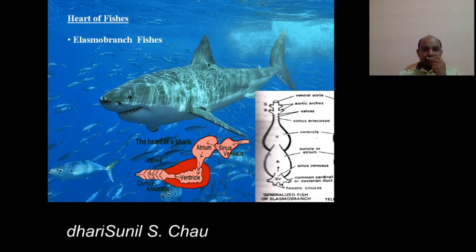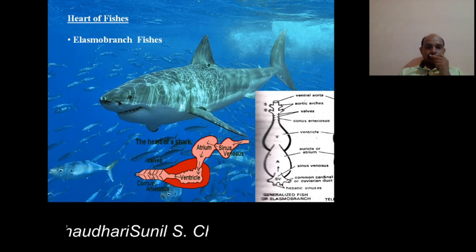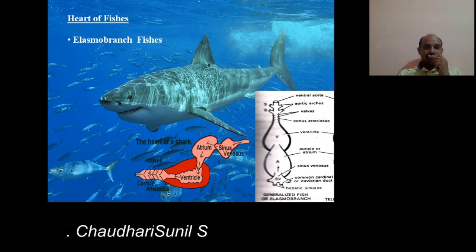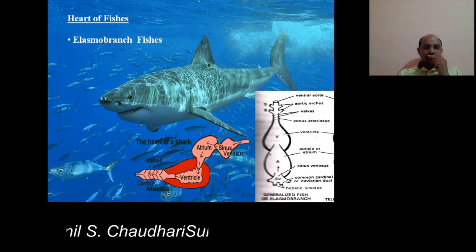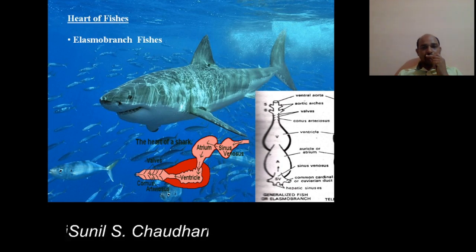The sinus venosus collects the blood from throughout the body, and that blood is transferred to the atrium. The atrium pumps the blood and transfers it to the ventricle, and through the ventricle to the conus arteriosus, which transfers the blood throughout the body.